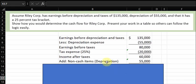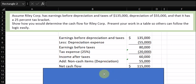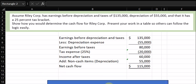I should say depreciation expense there, but we'll keep it brief. And that generates net cash flow of $115,000, and that's the answer here. I hope you found this helpful. Thank you.